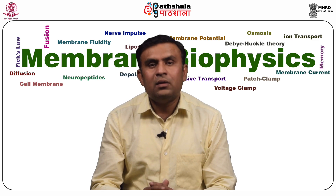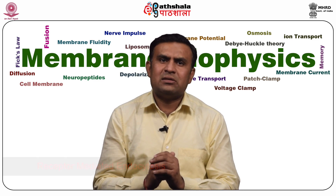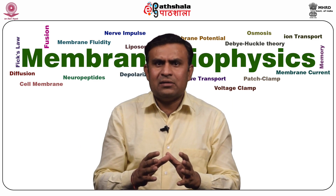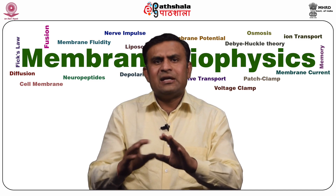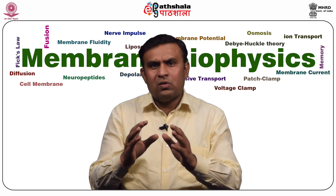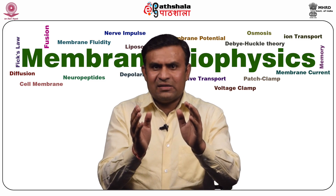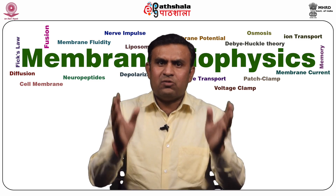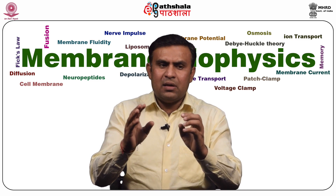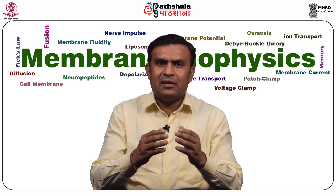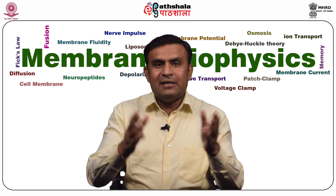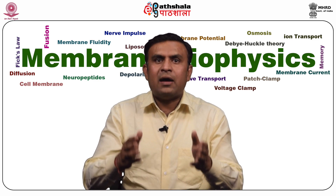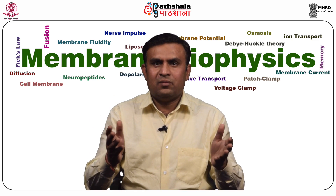In receptor-mediated endocytosis, molecules intended for internalization bind to receptors present on the cell surface. Those receptors are present on specialized regions of the plasma membrane such as clathrin-coated pits or caveolae. These vesicles facilitate the receptor-mediated endocytosis process.